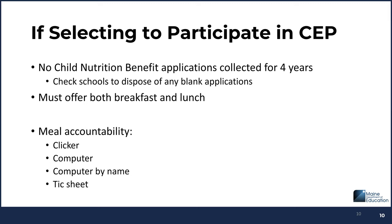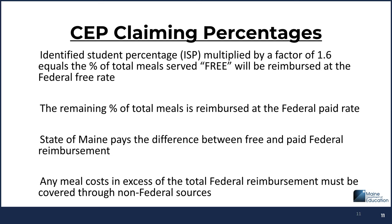Meal accountability is simpler. You can use a tick clicker or tick sheet. If you're more comfortable, you can continue to use the computer to get a count. You can still use an accountability by name — just make sure it's not charging the students, so families won't get a bill at the end of the month that they don't owe. The CEP claiming percentage: the ISP multiplied by the factor of 1.6 gives the meals claimed at the free rate. The remaining percentage is reimbursed at the federal paid rate. The State of Maine has legislation to pay the difference between free and paid federal reimbursement; any meal cost in excess of that must be funded by the district.